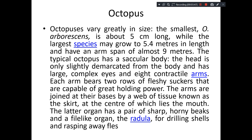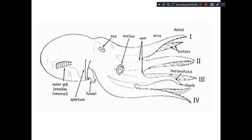These arms are joined at their base by a web of tissue known as the skirt, usually at the center of which lies the mouth. This mouth has a pair of trophic organs known as the radula. All molluscans have this rasping organ — the radula — for cutting. This radula is used even for drilling the shells of other molluscans and for rasping.